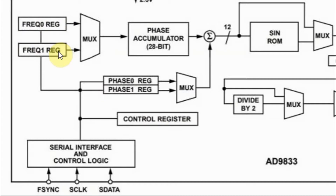We also have phase shift register 0 and phase shift register 1, which are 12-bit registers that add the amount of phase shift to the generated waveform.